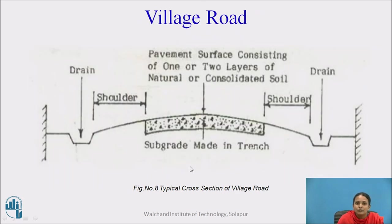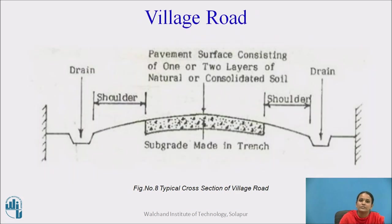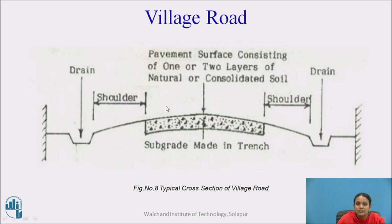Here is the typical cross section of the village road. National highways or express highways are normally built with concrete or flexible pavements. For village roads, natural materials like soil, murum, etc. are used. It is provided as subgrade in trench, but shoulders and drains are also necessary in village roads to drain off the surface water collected on the road surface.